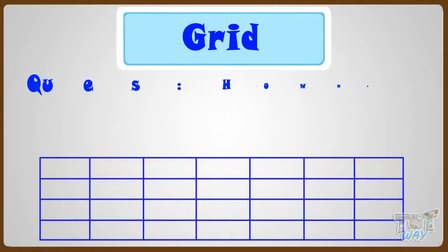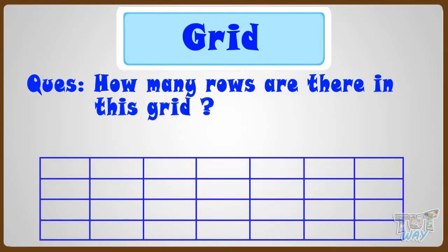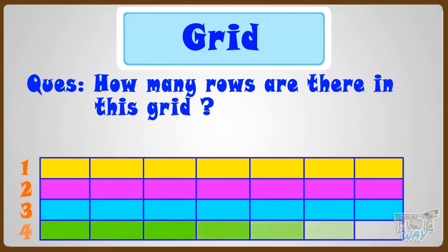Now let's see how many rows are there in this grid. 1, 2, 3, 4. So, there are 4 rows in this grid,